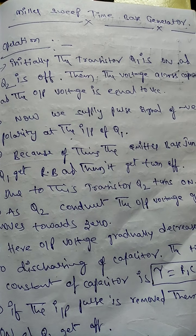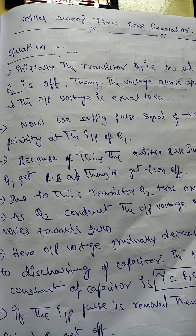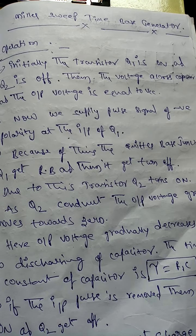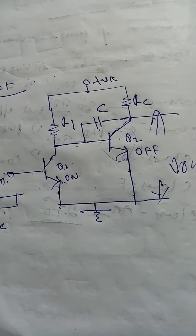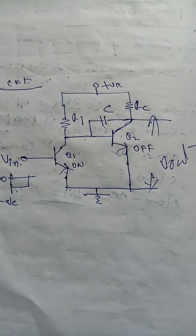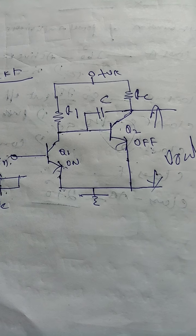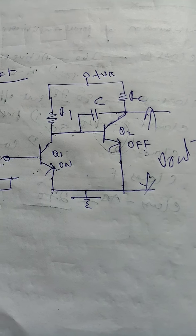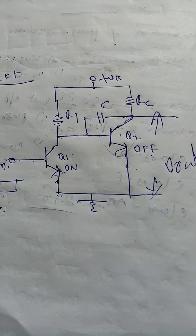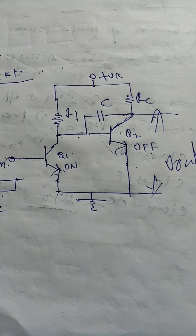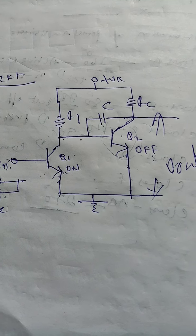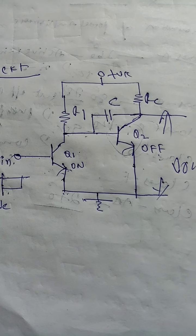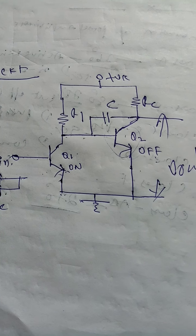Today I'm going to explain the Miller Sweep Time Base Generator. This is one of the techniques to generate a time base signal. A time base signal generates voltage and current with respect to time.